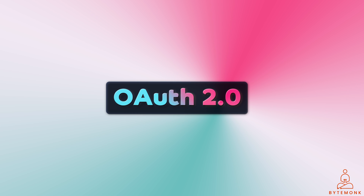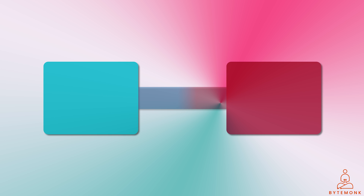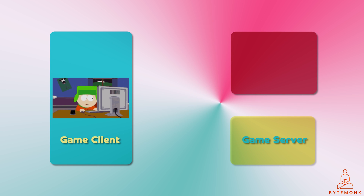Simply speaking, OAuth 2.0 is a way for two websites to talk to each other without sharing your password. It works like this: let's say you want to play a game on your computer, but you need to login to your Google account to play it. You don't want to give the game your password, so you use OAuth 2.0 instead.